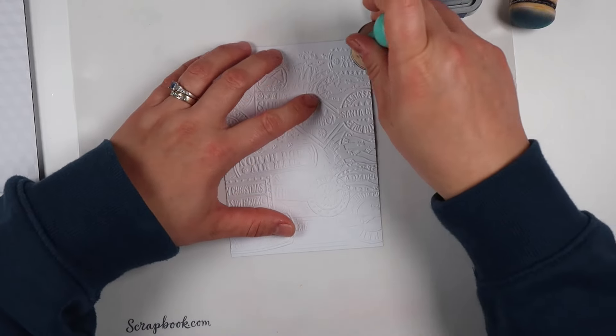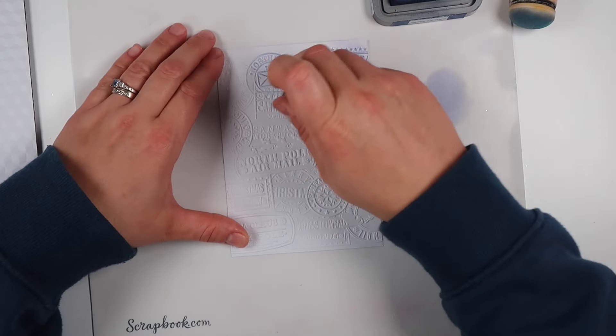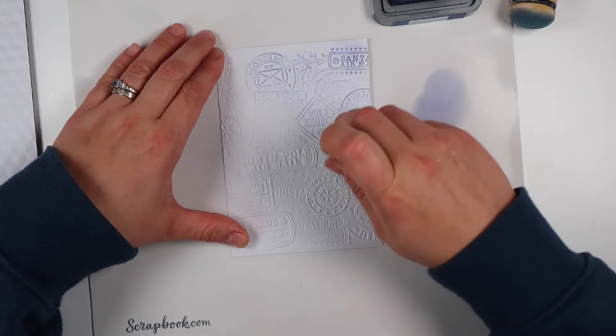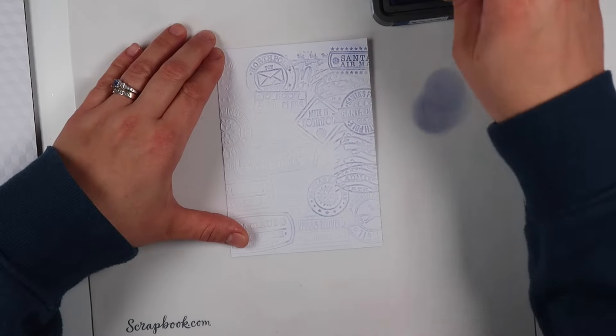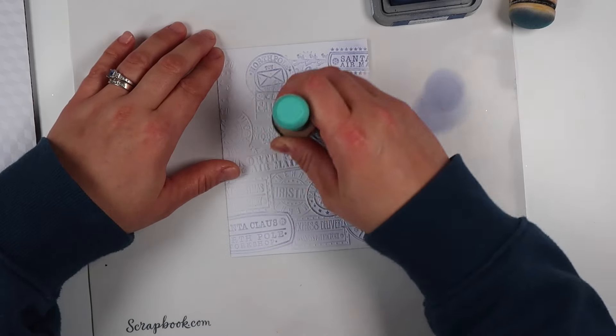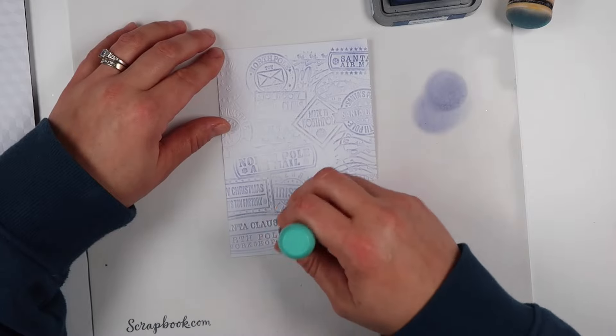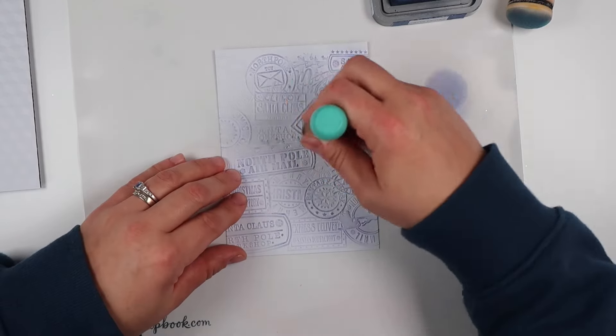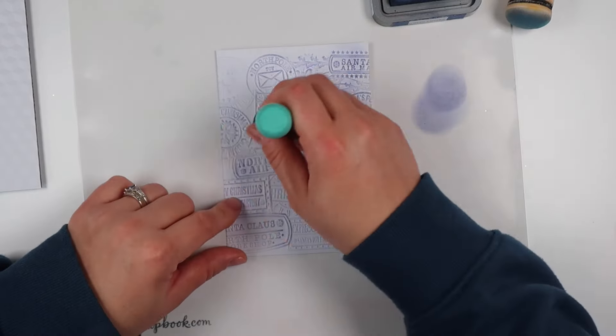This technique works great with any embossing folder—it doesn't need to be 3D, it can be just basic. You're going to ink up a sponge dauber, and very gently we're going to apply that ink along the top surface of the card. I'm going in a circular motion and just very lightly dusting it on.